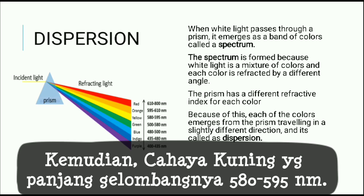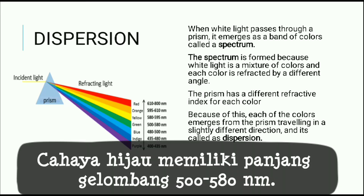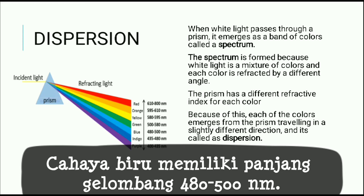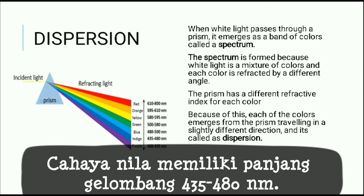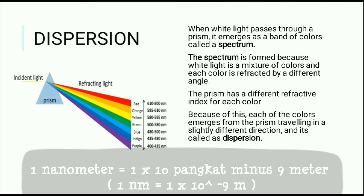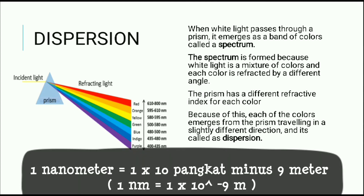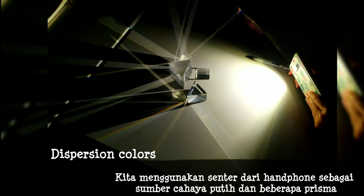Next is yellow, which is 580 to 595 nanometers. Then we have green, from 500 to 580 nanometers. Then blue, which is 480 to 500 nanometers. Then indigo, which is 435 to 480 nanometers. Lastly, purple, which is 400 to 435 nanometers. A nanometer is 1 × 10⁻⁹ meters, so it's very, very small.